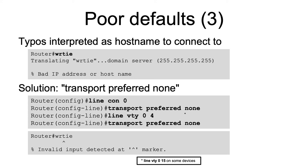A solution to this would be disabling this by typing the command 'transport preferred none'. You would do this either under 'line console' for the console output, or you would use 'line vty 0 4' interfaces, which you would use for accessing the router using Telnet or SSH.